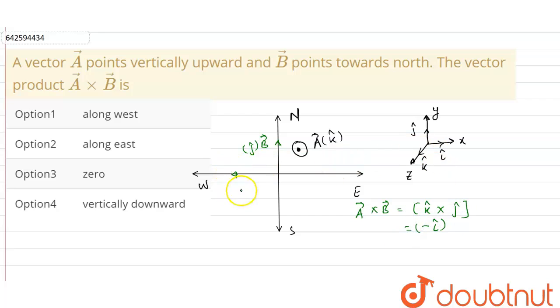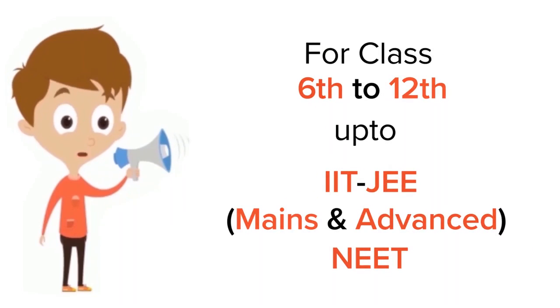This is i cap in the negative direction. So the vector A cross B is along west. Option number one is the correct option. Thank you.